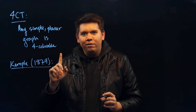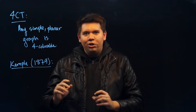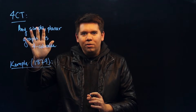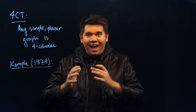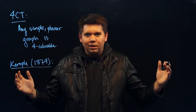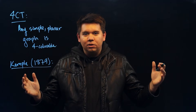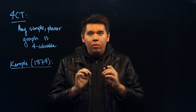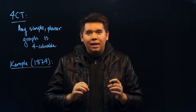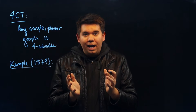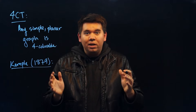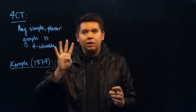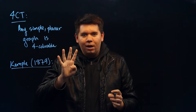If you have just one vertex, you can color that with just one color, so the theorem holds. Therefore, you can assume if you have n vertices, you can color those vertices with just four colors. Now we want to show that if we have a graph with n plus 1 vertices, we can color those with just four colors.